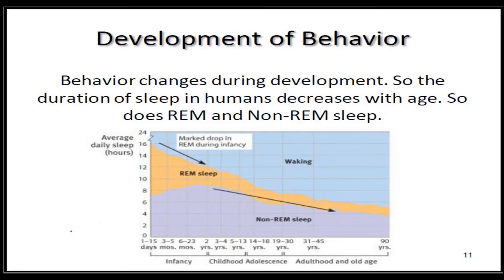The development of behavior refers to how it changes over time. For example, REM and non-REM sleep — deep sleep and dream-state sleep. When you are young, you have more REM and non-REM sleep, but as you grow older, this decreases. So this is the development of behavior through time.